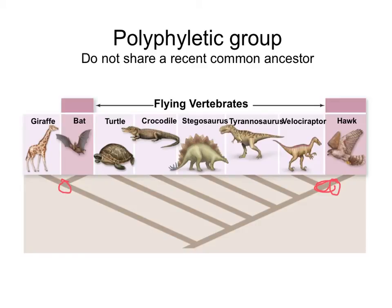Although they do have a common ancestor — since all organisms share a common ancestor at some point — their common ancestor is not a recent one. Their recent ancestors are different. So since they do not share a recent common ancestor, they form a polyphyletic group.